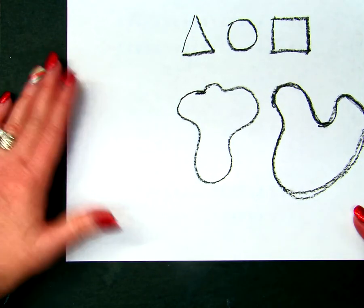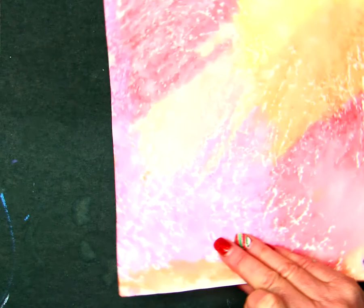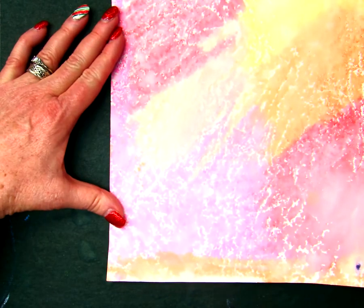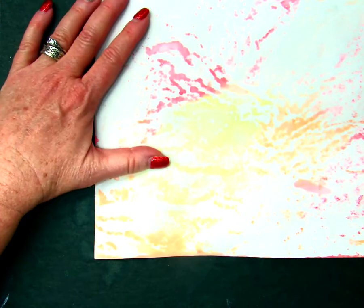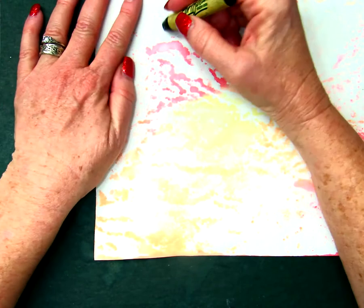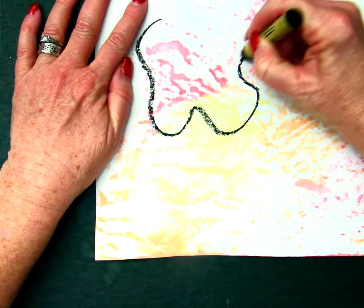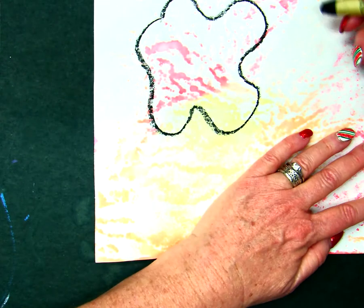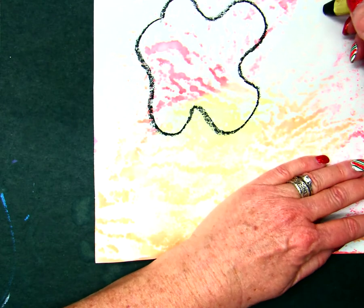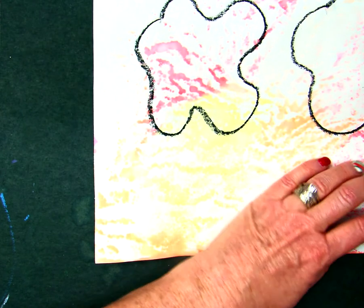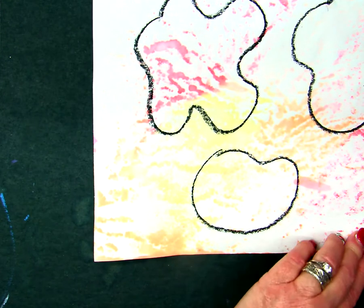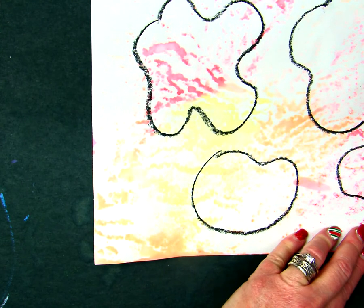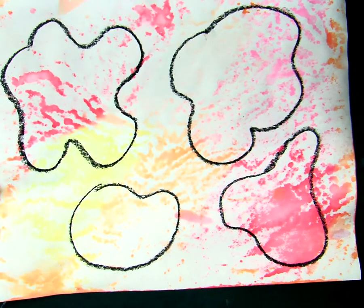All right, so I'm going to start with my warm color paper and I'm going to flip it over on this side. I'm going to make, I don't know, three, maybe four nice organic shapes. Looks like I got room for maybe four.